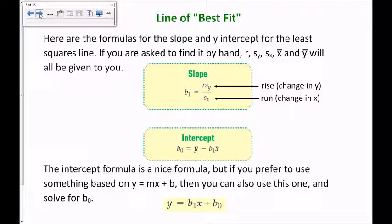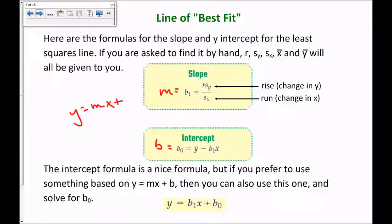So, to make things simple, here are the equations that give you the slope and the y-intercept for our line of best fit. b₁ — you can think of as m if you want to think in terms of y = mx + b — the slope b₁ is equal to r, the correlation coefficient, times sᵧ over sₓ. You can remember this as rise over run, or change in y over change in x. The y-intercept b₀ is equal to ȳ minus b₁ times x̄. So you'll need to find the slope first and plug that in when you find your intercept.